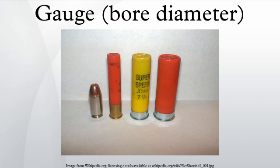The gauge of a firearm is a unit of measurement used to express the diameter of the barrel. Gauge is determined from the weight of a solid sphere of lead that will fit the bore of the firearm, and is expressed as the multiplicative inverse of the sphere's weight as a fraction of a pound.